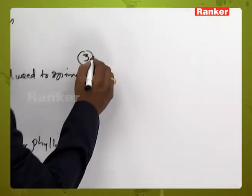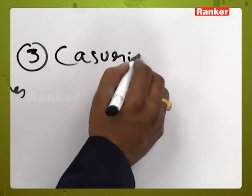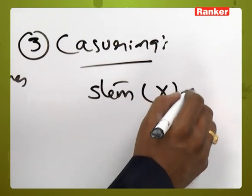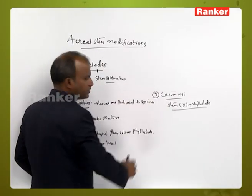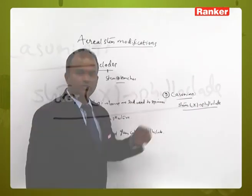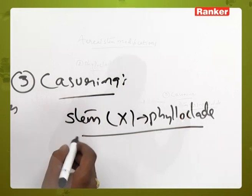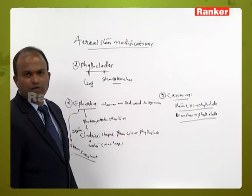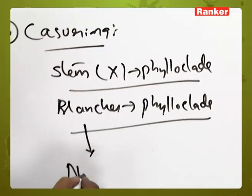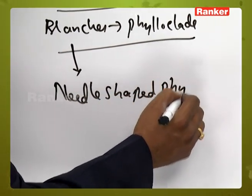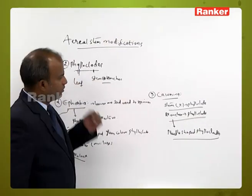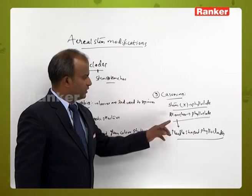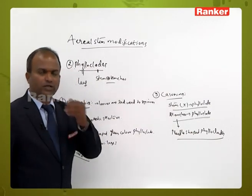The third example is Casuarina. In Casuarina, the stem itself is not modified into a phylloclade. Instead, the branches are modified into phylloclades — specifically, needle-shaped branches are modified into needle-shaped phylloclades, which can be seen in Casuarina.